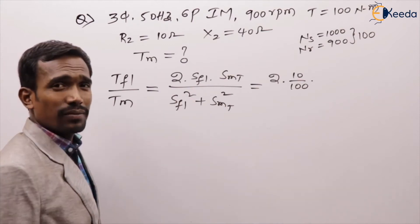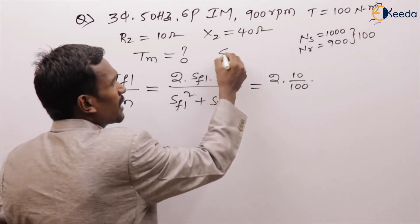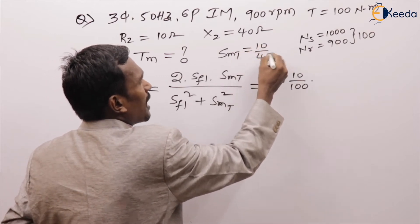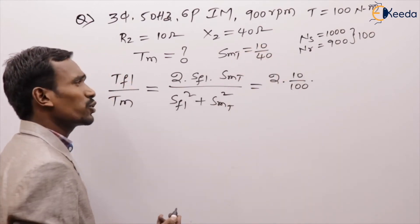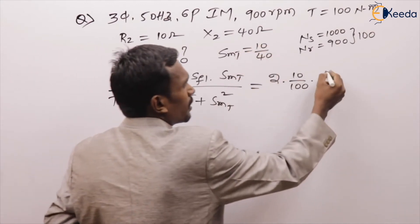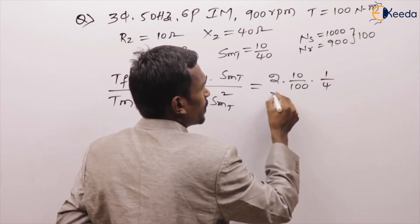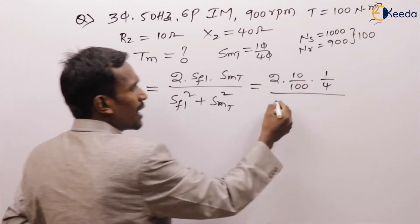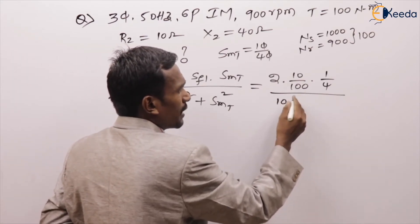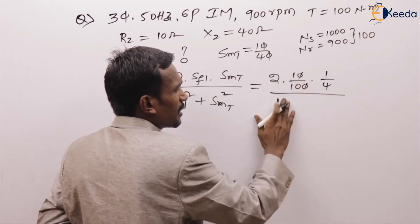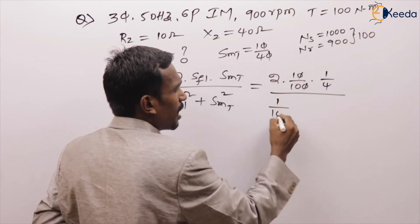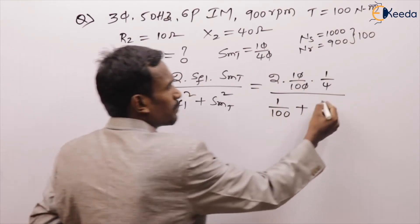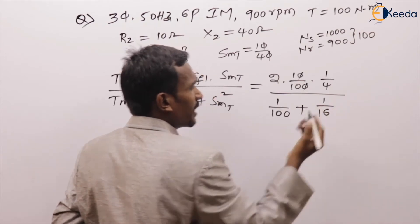S_MT = R2/X2 = 10/40 = 1/4. Substituting: 2 × (1/10) × (1/4) divided by (1/10)² + (1/4)² = (1/20) divided by (1/100) + (1/16).